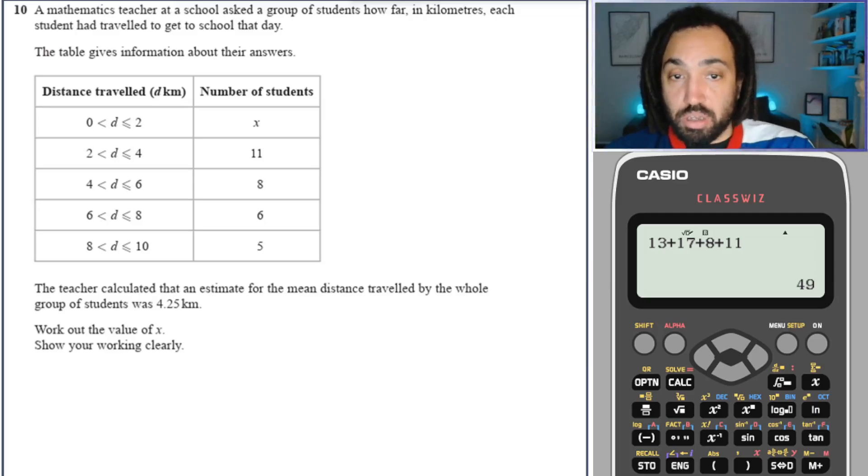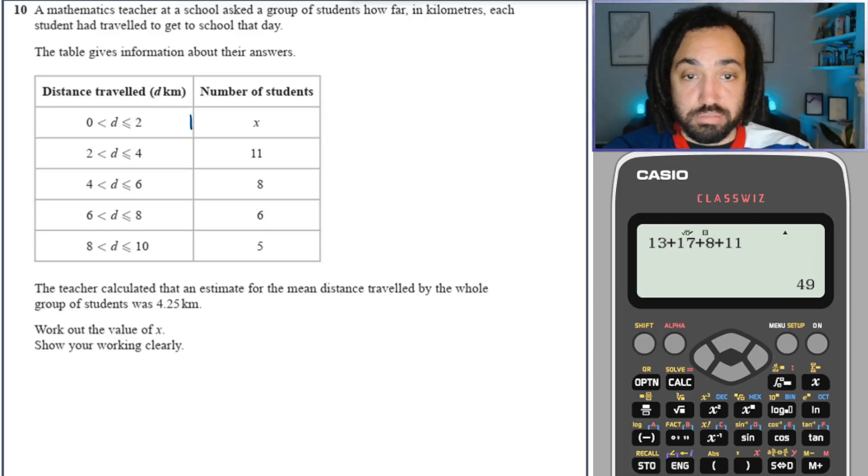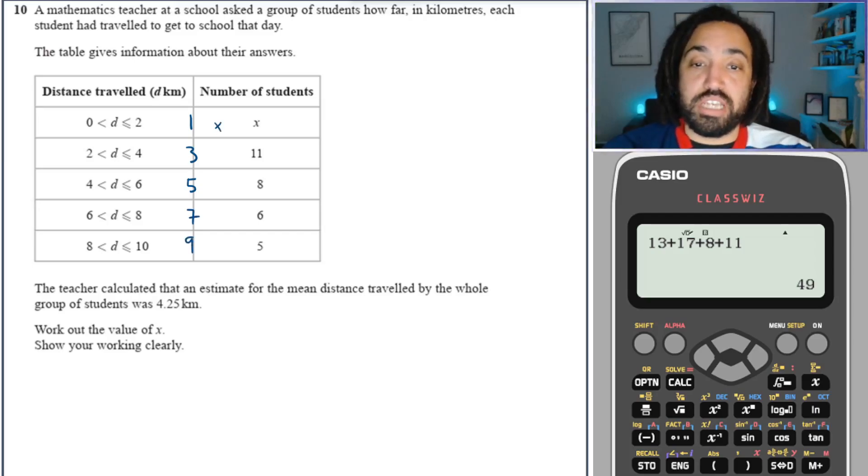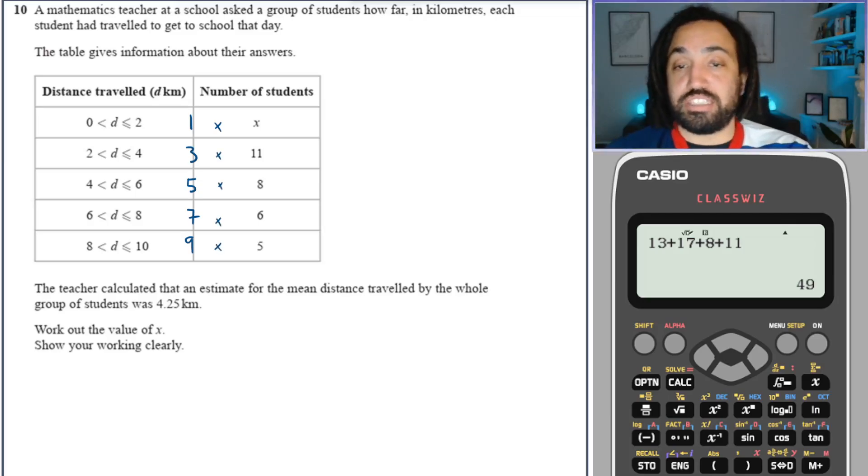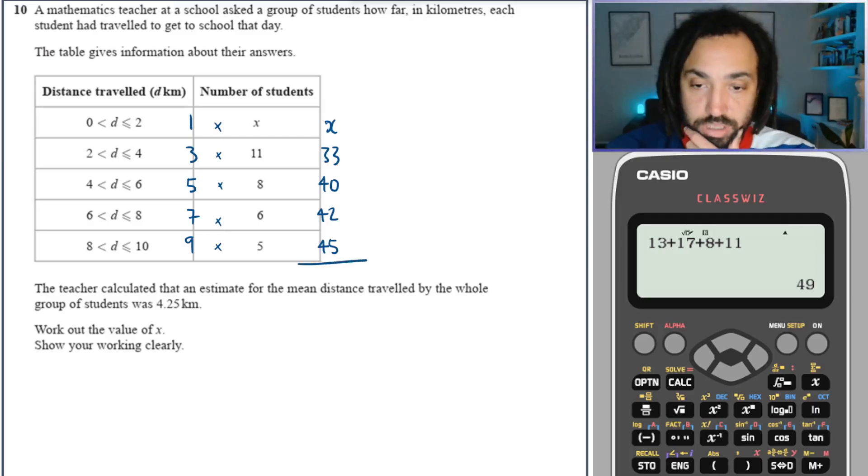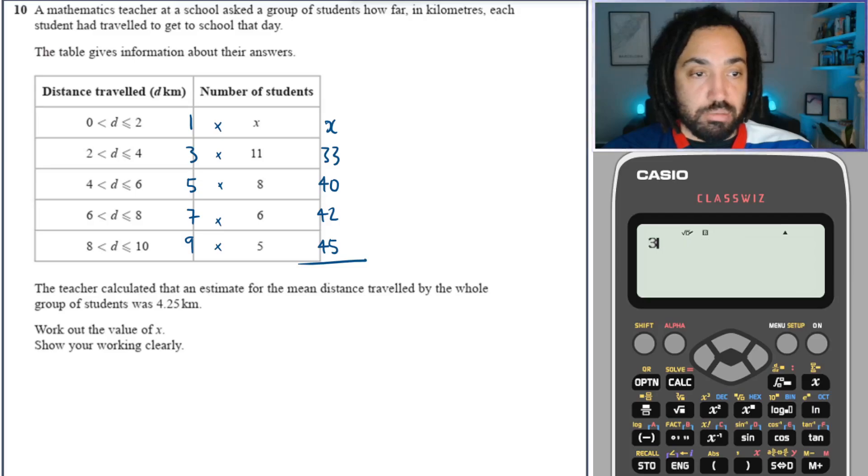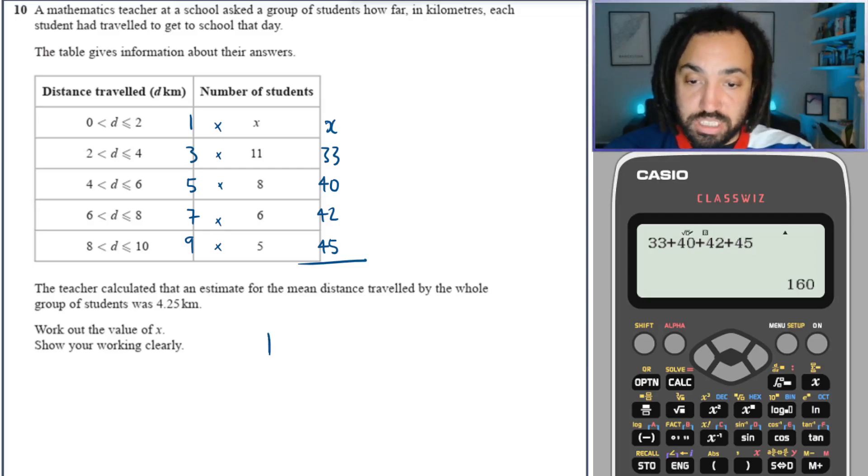What we're going to need is the midpoints, because those are roughly how far each person in that class traveled. For the first one it is 1, then it's 3, then it's 5, then it's 7, and then it's 9. Then we'll take those and multiply them by the frequencies, and that will give me an estimate for how far each of the rows would have traveled. So this one is x, because 1 times x is x. This one is 33, this one is 40, this one is 42, and this one is 45. Then we would add those up.